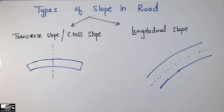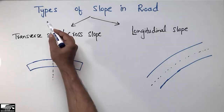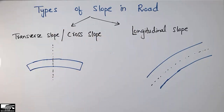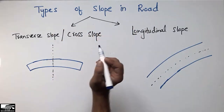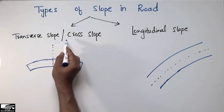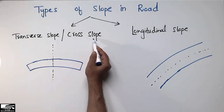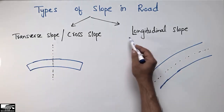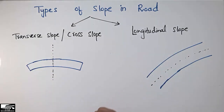Welcome back to the civil engineering YouTube channel. Today our lecture is about the types of slope in the road. There are two main types of slope in the road: one is called the transverse slope or the cross slope, and the second one is the longitudinal slope.